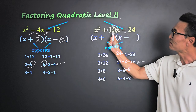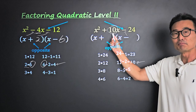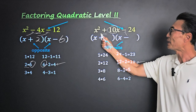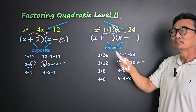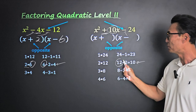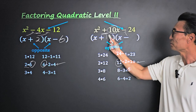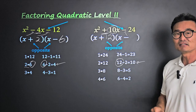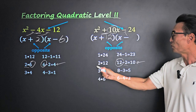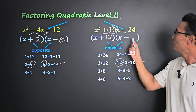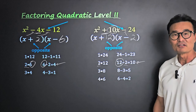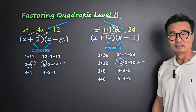In this case, the value of b, or 10, is positive, which means we take the bigger number, 12, where the plus is, and put the other number, 2, where the minus sign is.